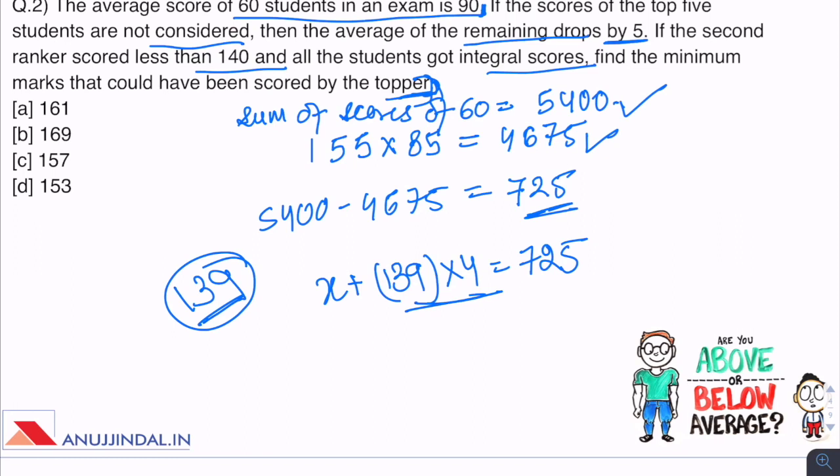Why 139 into 4? Because we are assuming all rankers - 2nd, 3rd, 4th and 5th - got 139 marks each, as it is the maximum marks they could get. We have to find minimum value of x, so we assume maximum value for these 4. x equals 725 minus 556 equals 169 marks. So the minimum marks that the topper could have scored is 169 marks.